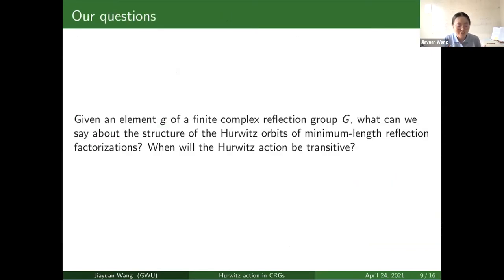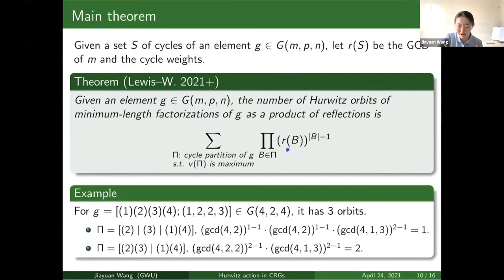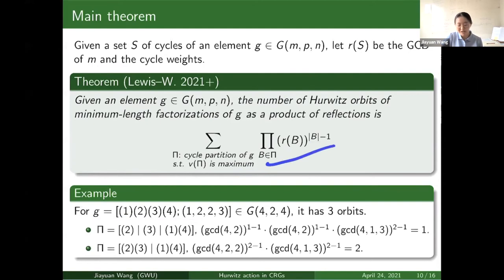Now we are ready to introduce the question we set out to answer: given an element of a finite complex reflection group, what can we say about the Hurwitz orbit structure, and especially when is the Hurwitz action transitive — that is, when do we have a single orbit? Here is our answer: for any element in G(m,p,n) the number of orbits is the summation over all cycle partitions that have maximum value. For each cycle partition we compute a product over its parts, where for each part we compute R(b) — the GCD of m and the weights of all cycles in that part — raised to the power of the size of that part minus one. Going back to our example, there are two cycle partitions with maximum value: one gives one orbit, the other gives two orbits, so in total this element has three orbits.